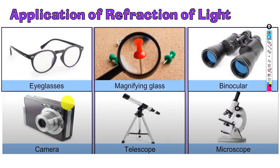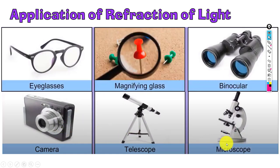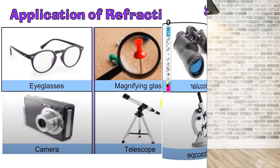Finally, applications of refraction of light include eyeglasses, magnifying glass, binoculars, cameras, telescopes, and microscopes - all using lenses that rely on refraction. Refraction occurs when light passes through a medium and its velocity changes. Our lesson covers real depth and apparent depth and introduces these applications. This finishes the topic of refraction; the next topic will be total internal reflection. Thank you for watching.